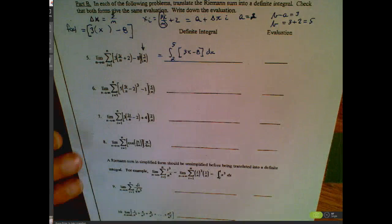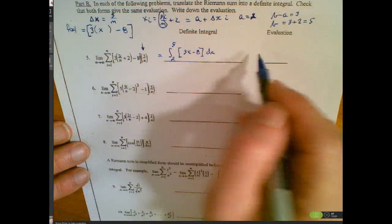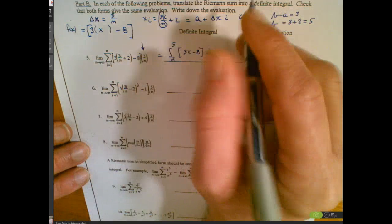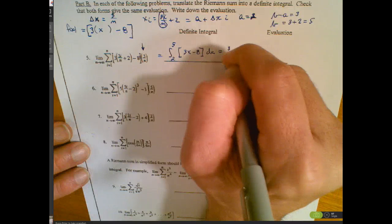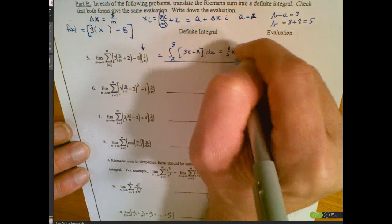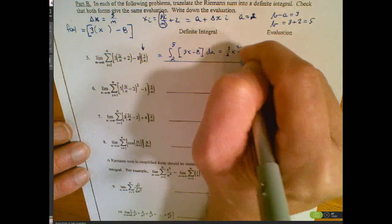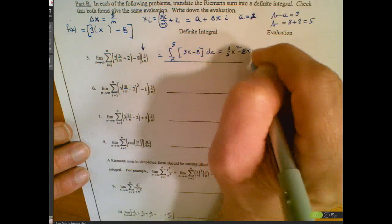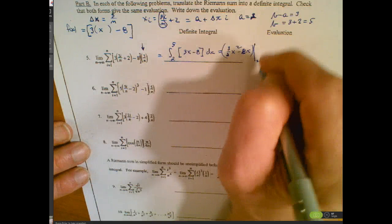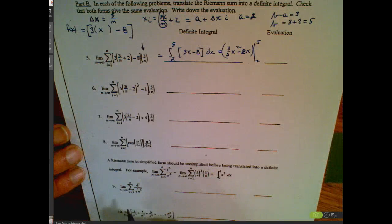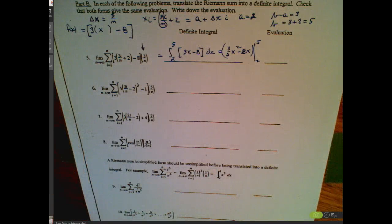To evaluate it, we use anti-differentiation: we get (3/2)x² - 8x, evaluated between 2 and 5. We could go ahead and plug the numbers in to get the value, but let's jump to another example while we have time.